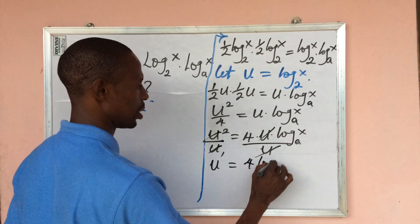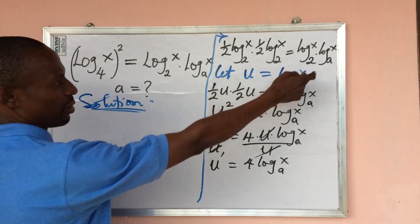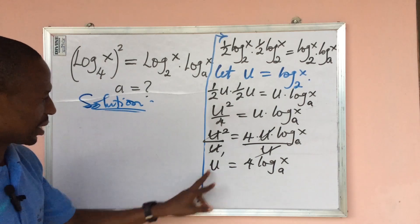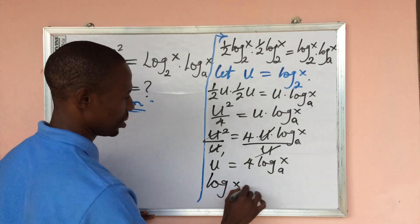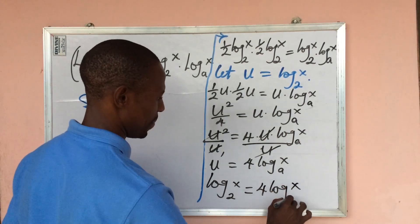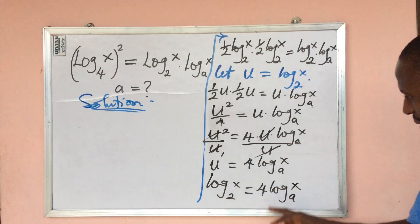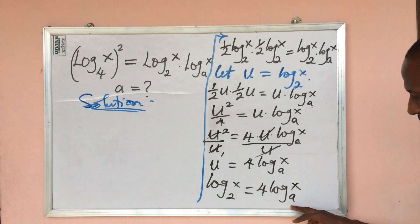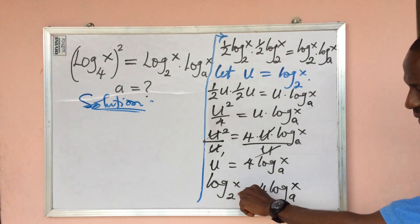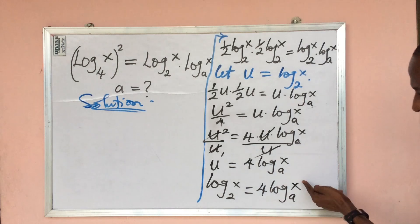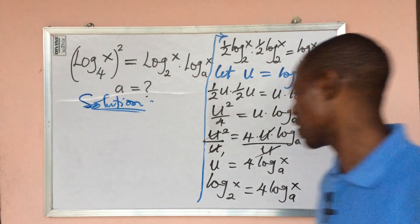We get u equals 4 log x base e. Recalling that u equals log x base 2, we substitute back: log x base 2 equals 4 log x base e. To get a common base, we find the reciprocal of both sides — the base and the argument swap positions.